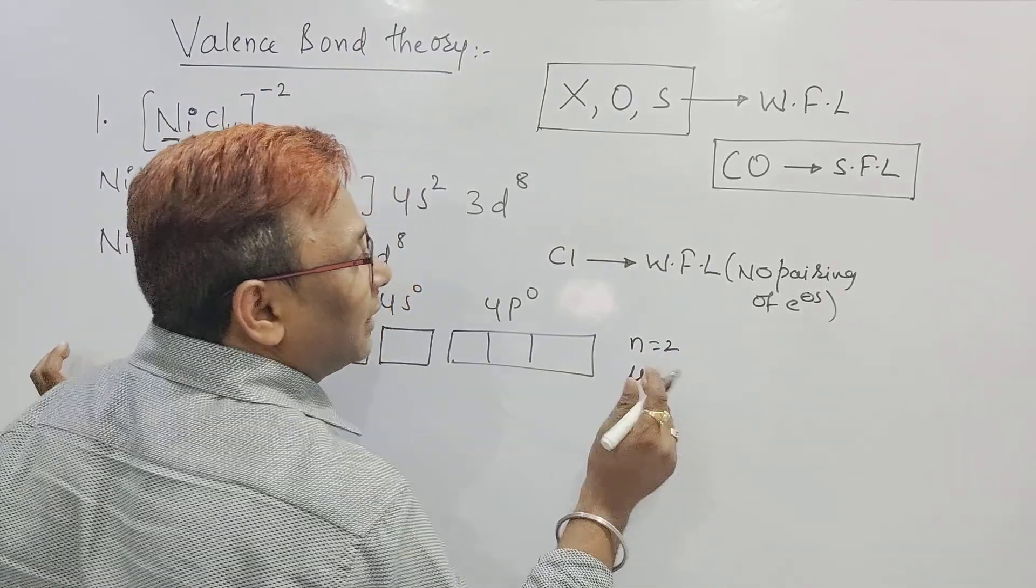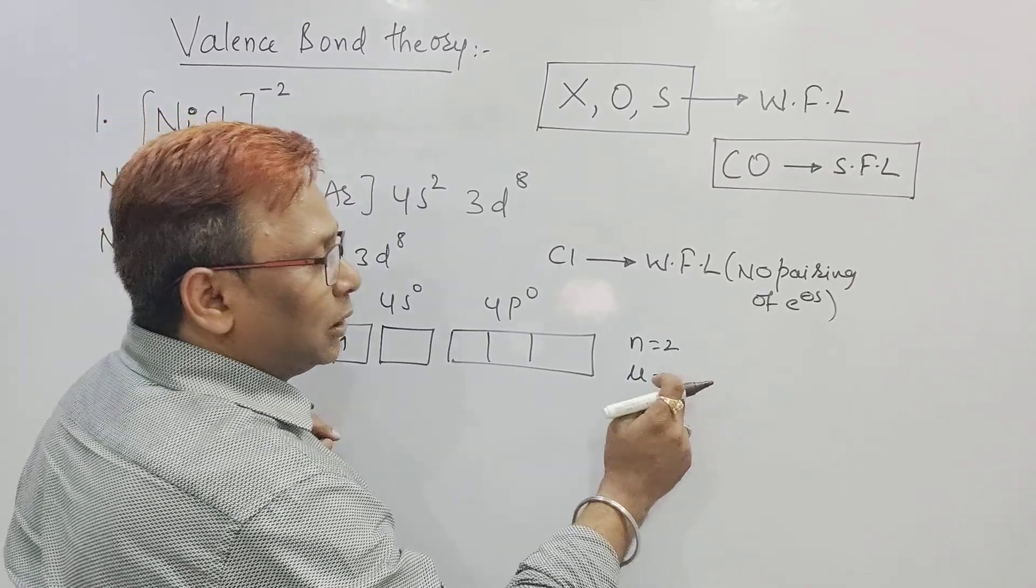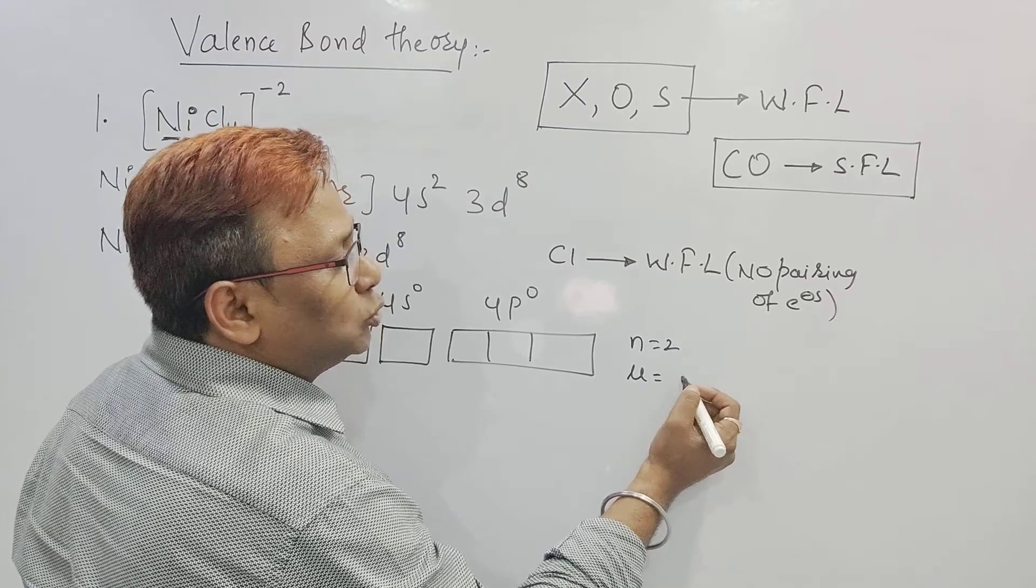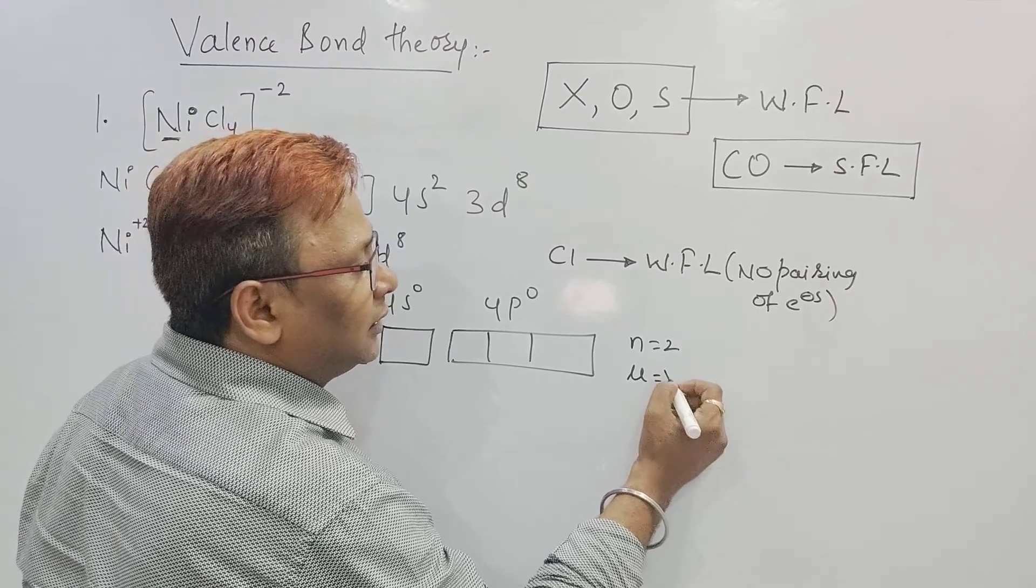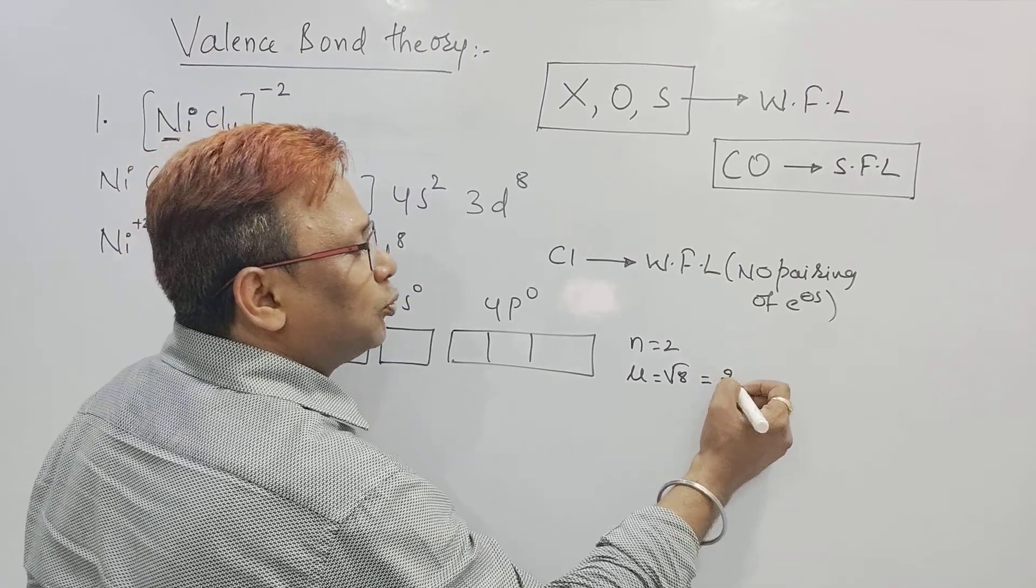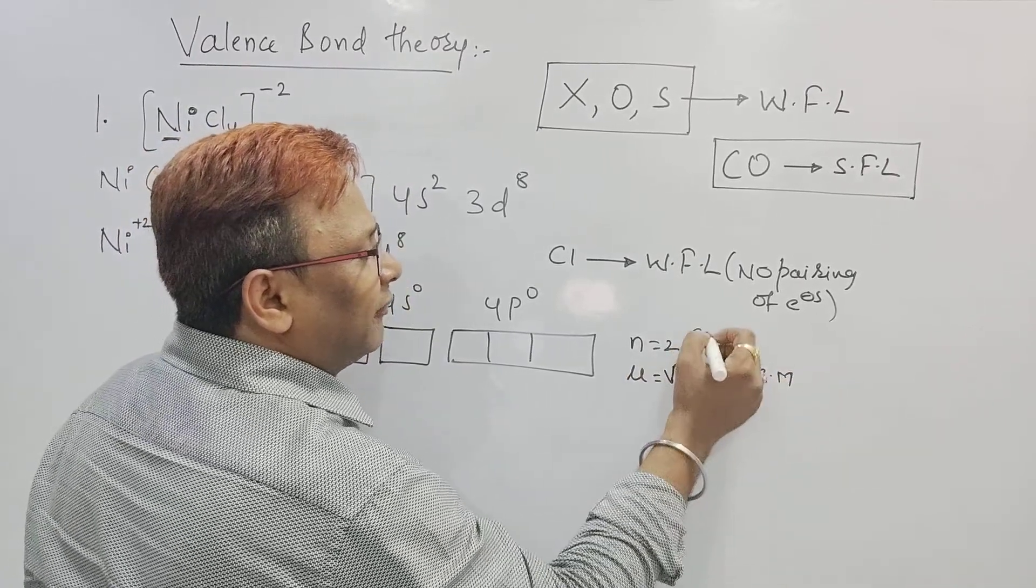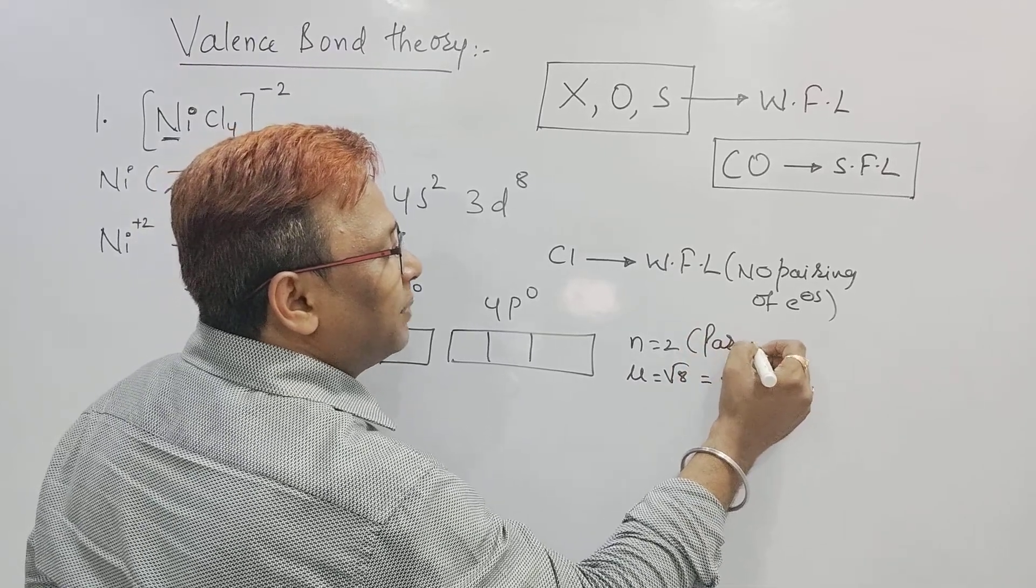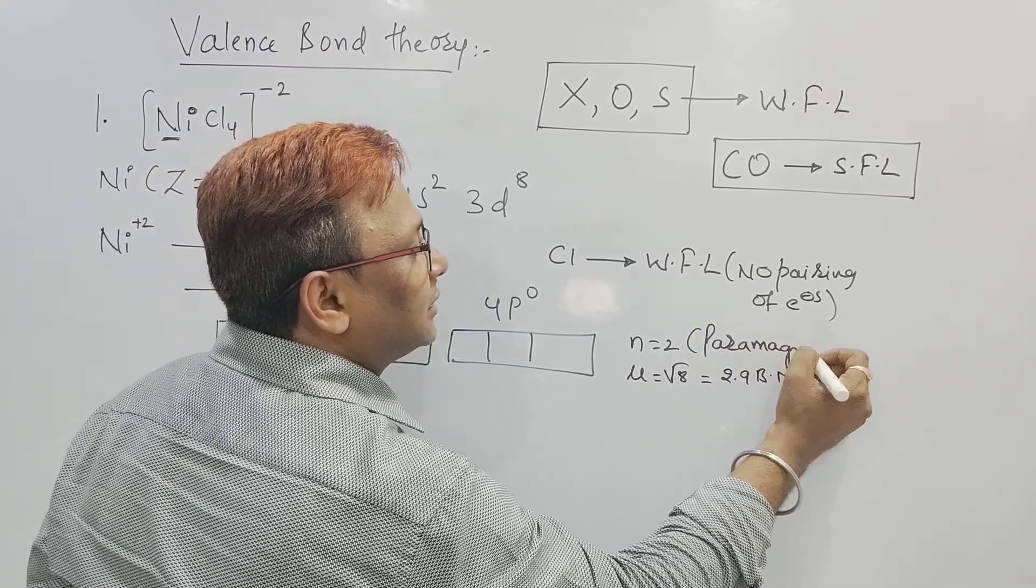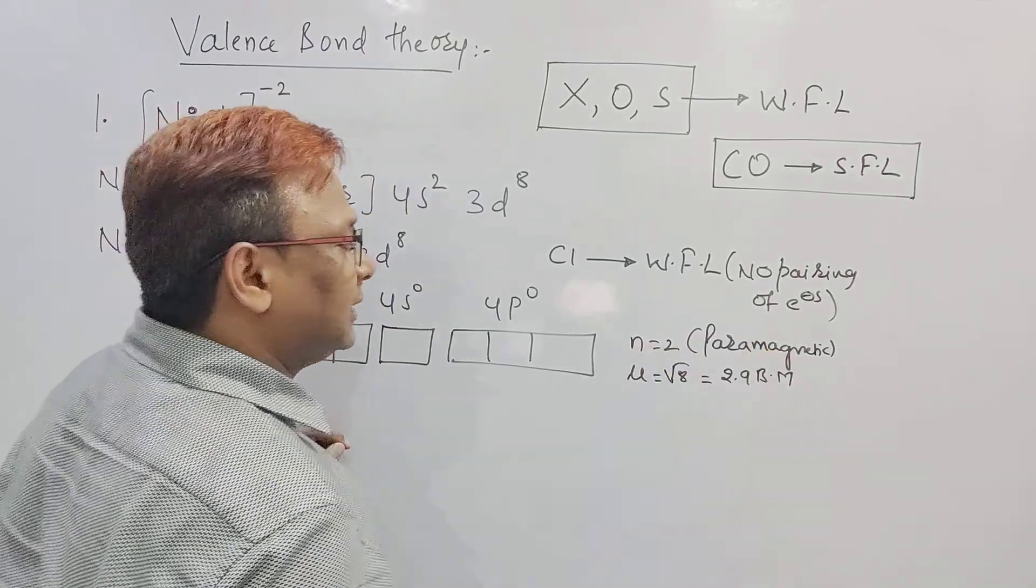Magnetic moment is equal to under root of n into n plus 2. 2 under root of n into n plus 2, 2 plus 2 is 4, 4 into 2 is 8, so root 8. Root 9 is 3, root 8 means 2 point something Bohr magneton. Number of unpaired is there. Obviously the nature is paramagnetic in nature.